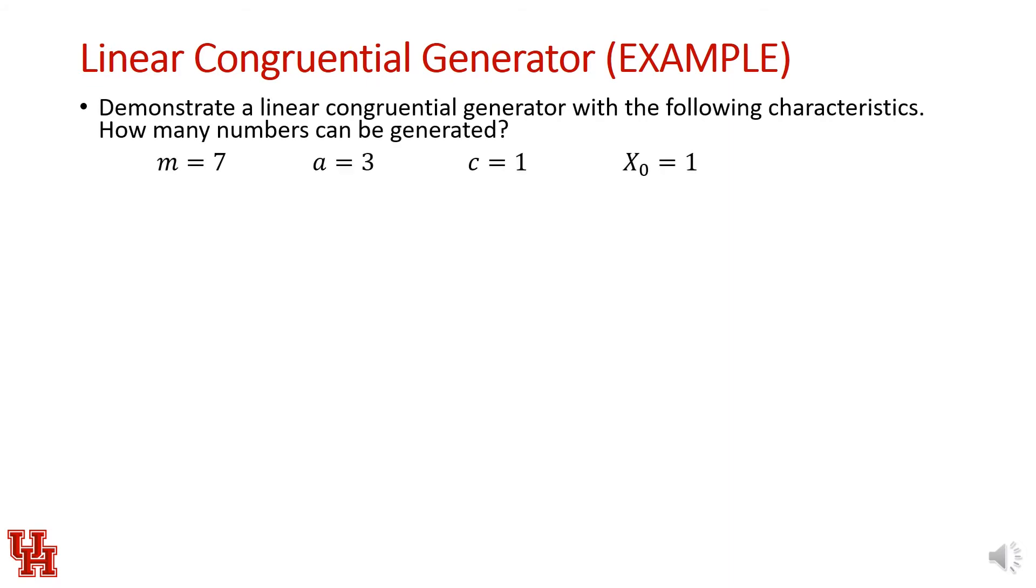Here's an example of a linear congruential generator and the sequence of numbers that it produces. If we have a modulus of 7, a multiplier of 3, an increment of 1, and a seed of 1, the LCG is expressed as this linear expression with the modulus operation. The first number generated is the seed, that's 1. The second is the seed times the multiplier plus the increment, mod 7, which is 4.